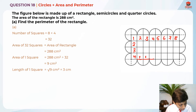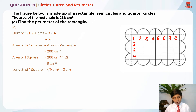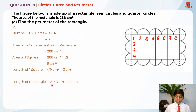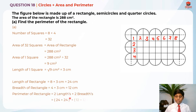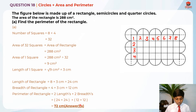To find the perimeter of the rectangle, we use the radius of 3 cm. The length of the rectangle is 8 × 3 = 24 cm, since there are 8 radii along the length. The breadth is 4 × 3 = 12 cm. So the perimeter is 2 × (24 + 12) = 24 + 24 + 12 + 12 = 72 cm. That's the answer for part A.